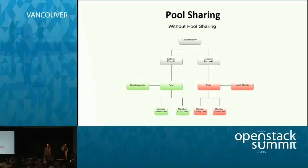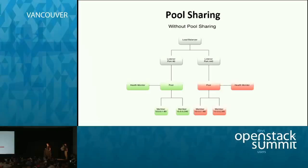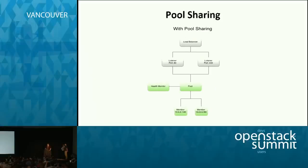Another thing that goes with L7 is pool sharing. Currently, a pool cannot live on two separate listeners. So in the case where you want to load balance on port 80 and on terminated 443, you would have to create a duplicate pool — duplicate members and a duplicate health monitor. If you ever need to update the pool, the health monitor, or the member, you'd have to do it twice, which is not a good user experience. With pool sharing, you can attach a pool to many different listeners, so whenever you update a pool, add or delete a member, it trickles to all the other listeners.